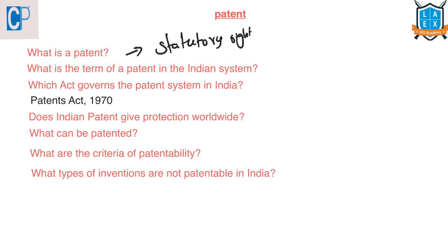First of all, what is a patent? A patent is a statutory right for an invention, and that right will be granted for a limited period of time to the person who had claimed this patent by the government in exchange for full disclosure of his or her invention. This patent right will exclude others from making, using, selling, or importing the patented product or the process for producing that product without the consent of the patentee.